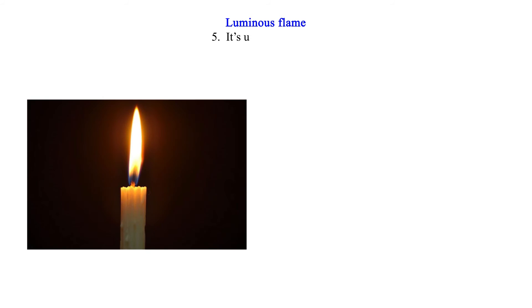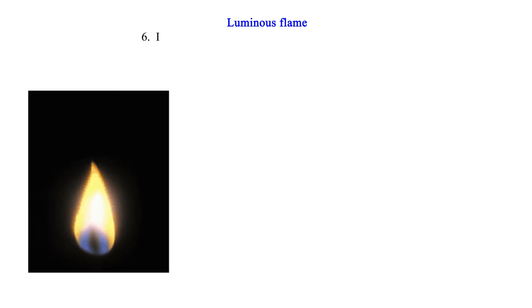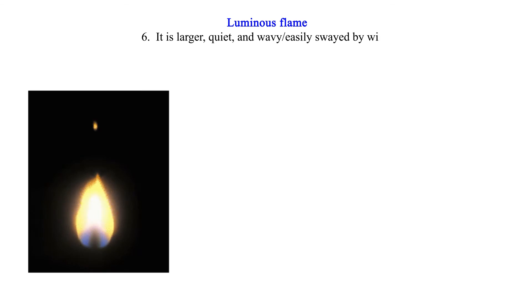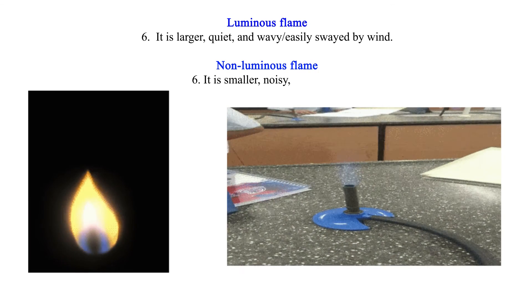Characteristic five: A luminous flame is used for lighting; a non-luminous flame is used for heating. Characteristic six: A luminous flame is larger, quiet, and wavy or easily swayed by wind. A non-luminous flame is smaller, noisy, and steady.